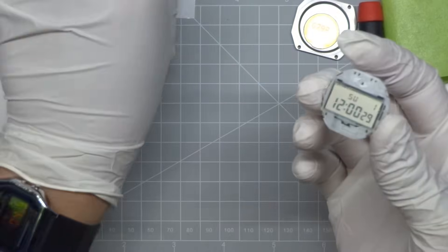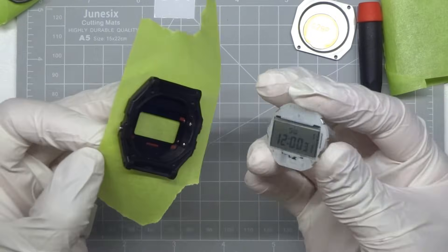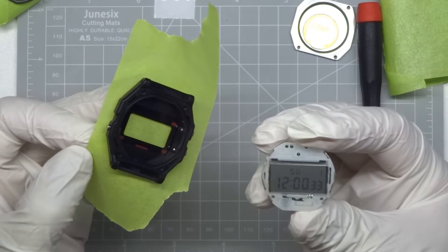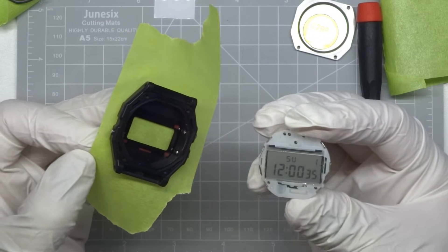Part 5: Final Assembly into the Watch Case. First ensure that the pushers are fully pushed out of the case. Inspect the LCD to ensure no dust is on it.